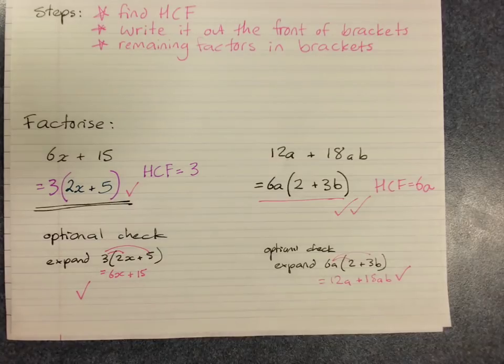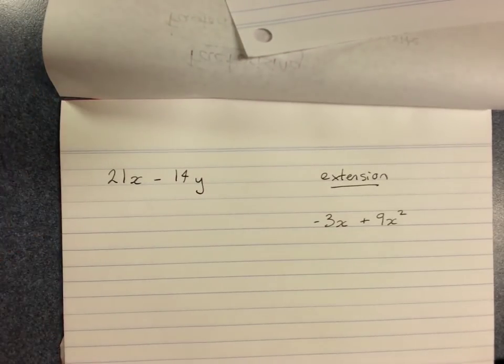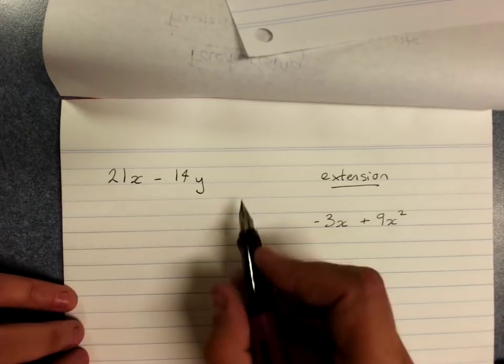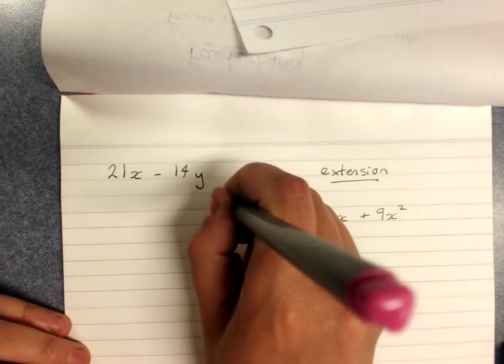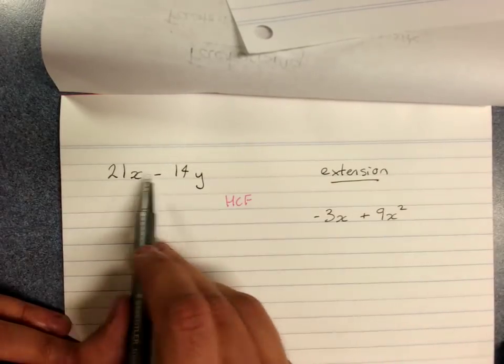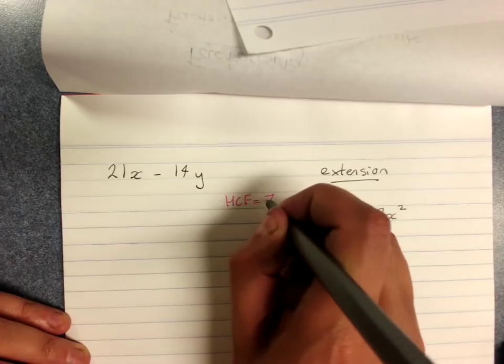So they're just opposites of each other. 21x minus 14y. Factorize this. First up, find the highest common factor. No letters in common, but the numbers. 7 goes into both of those.